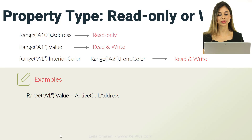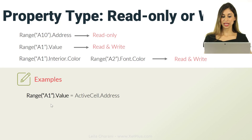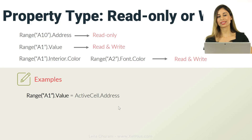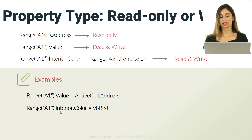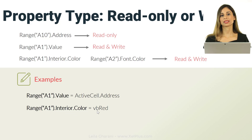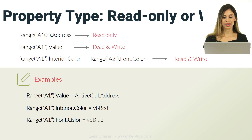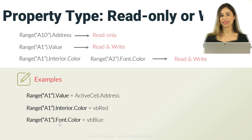Let's do some examples. We can say range(A1).value = activecell.address — we're reading the address and putting it into range A1. Or we have range(A1).interior.color and we're setting it to red, so we're writing to it. Similarly, we can change the color of the font to blue. That's basically it on properties.